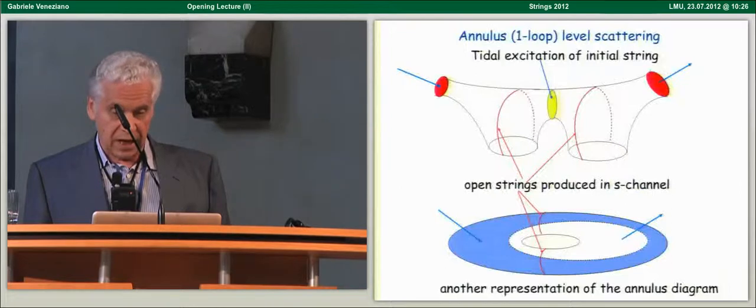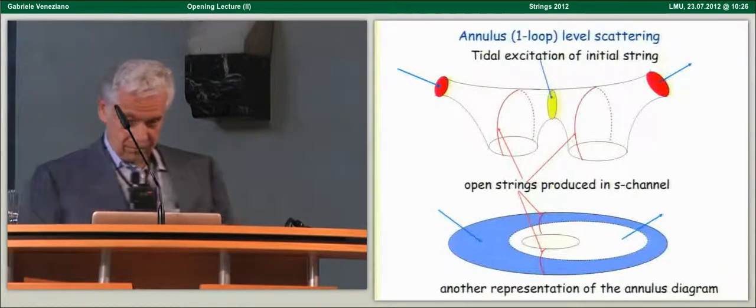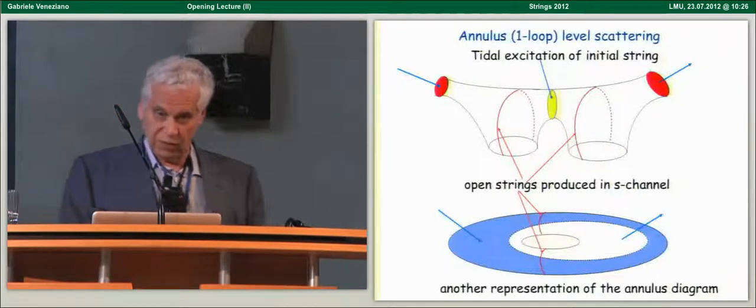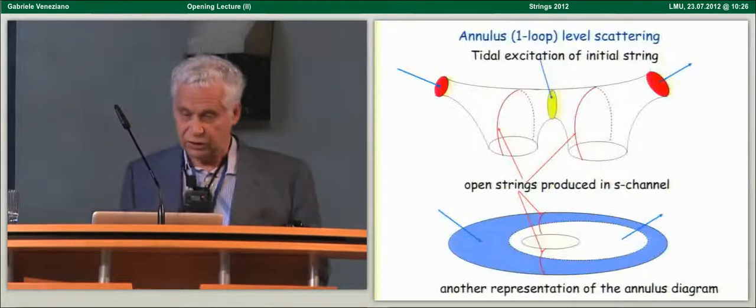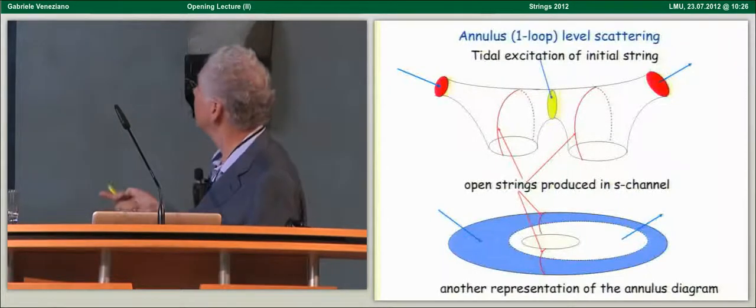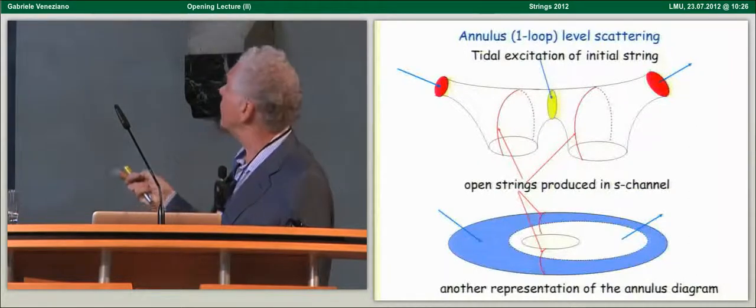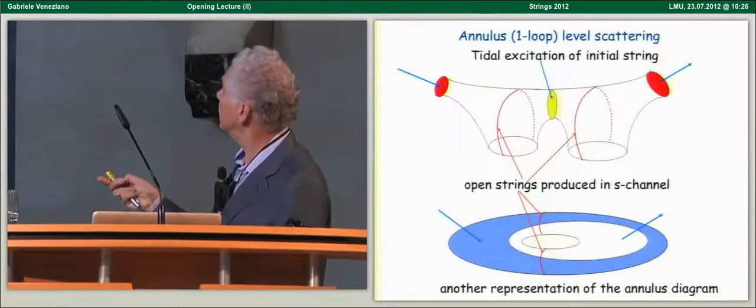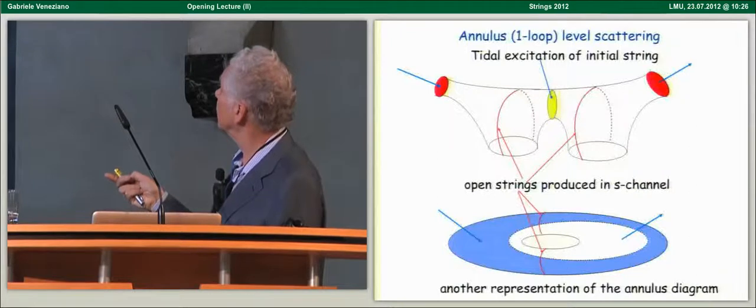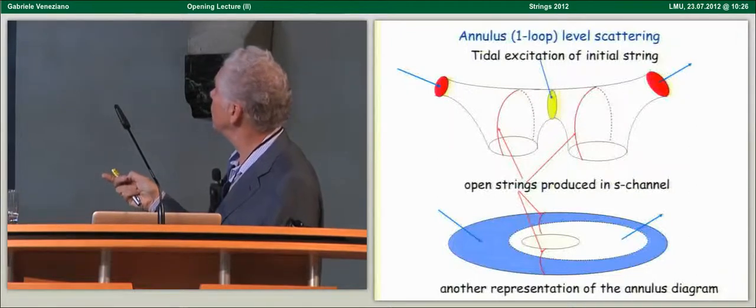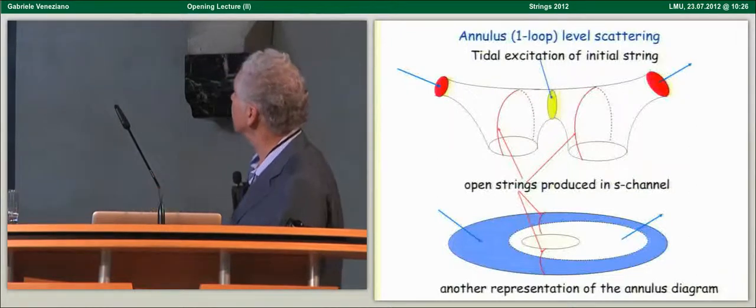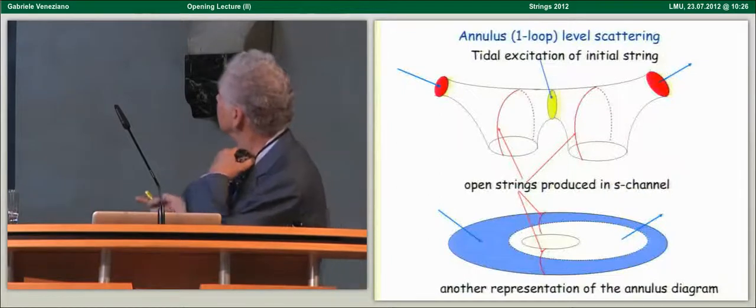Now, we start, okay, this is an example of a one-loop collision in which you see the same thing, but now again, like in the string case, the initial closed string can get excited, so there can be a tidal excitation of the initial string.